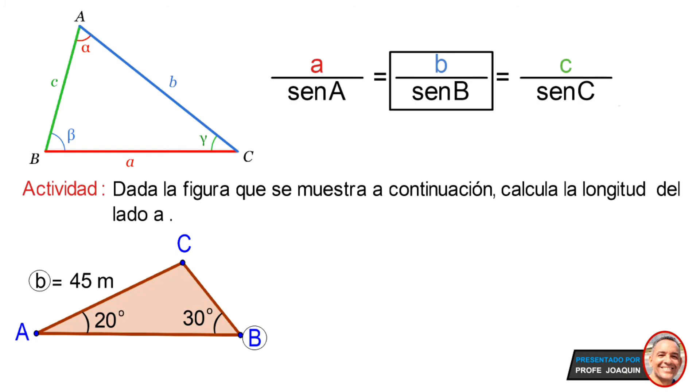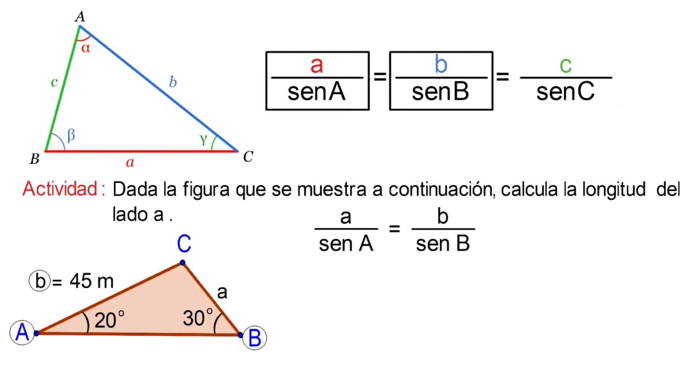Y el otro elemento que tenemos es la amplitud del ángulo A y debemos calcular la longitud de su lado opuesto, entonces corresponde al cociente. Luego utilizaremos la igualdad donde comenzaremos por reemplazar los elementos que tenemos por datos.